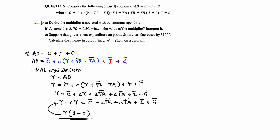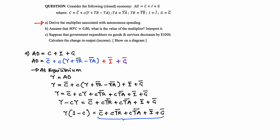So Y times (1 minus C) equals autonomous consumption plus C times autonomous transfer payment plus C times autonomous tax plus autonomous investment plus autonomous government spending. To make this easier, since all these identities are autonomous, let's represent them with A-bar, where A-bar represents autonomous spending.